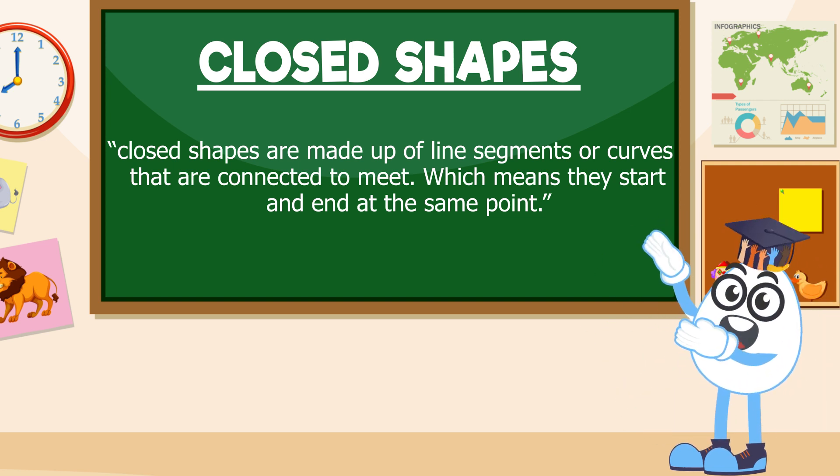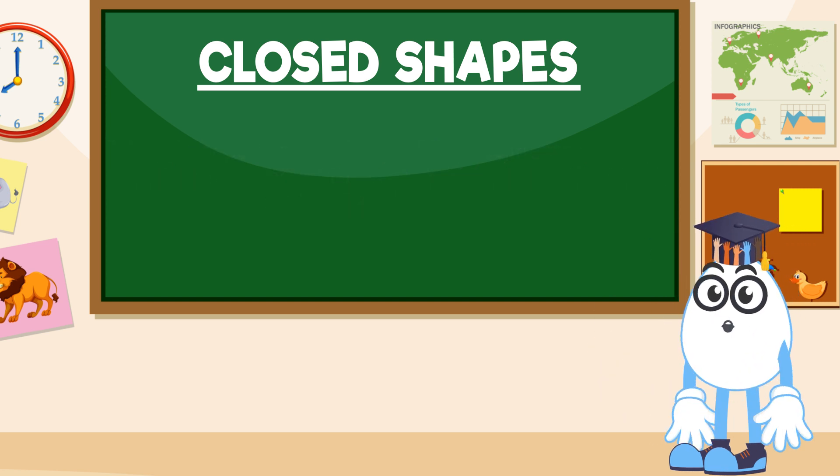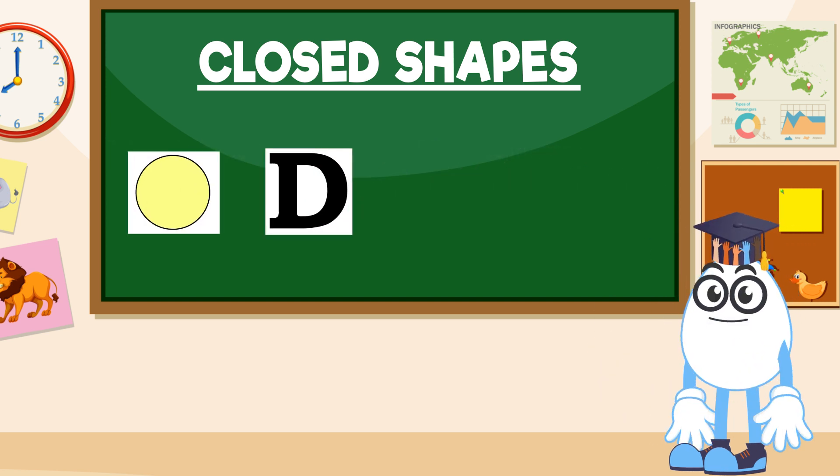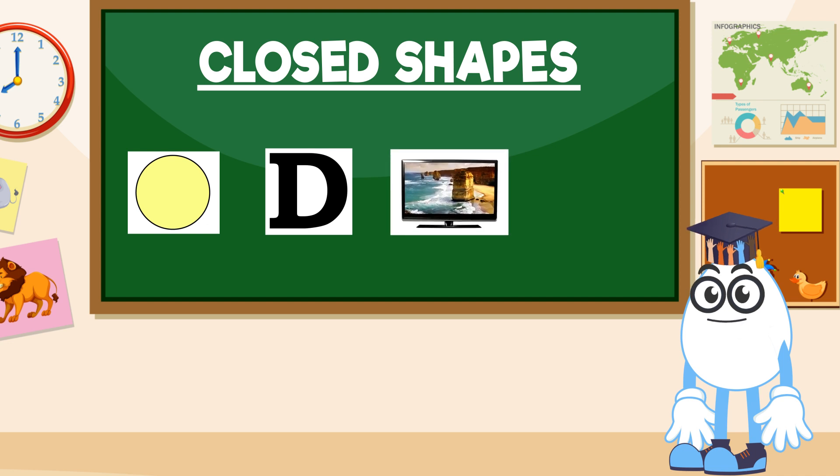Examples of closed shapes are a circle, the letter D, a television, a book, and many more.